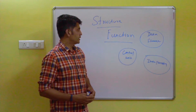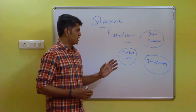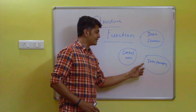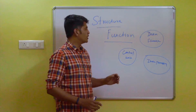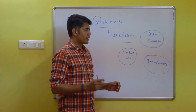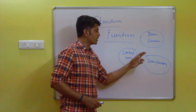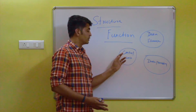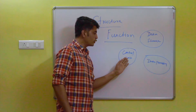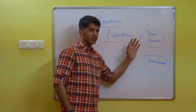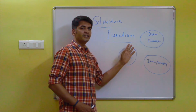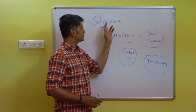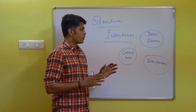In structure and function, structure will speak about how the components — the operational units — are connected with each other. For example, how the data storage is connected with the data processing unit, how the data processing unit is connected with the control unit, and how the control unit is connected with the data storage. This is the connection related to the operational units in the system — this is all about structure.